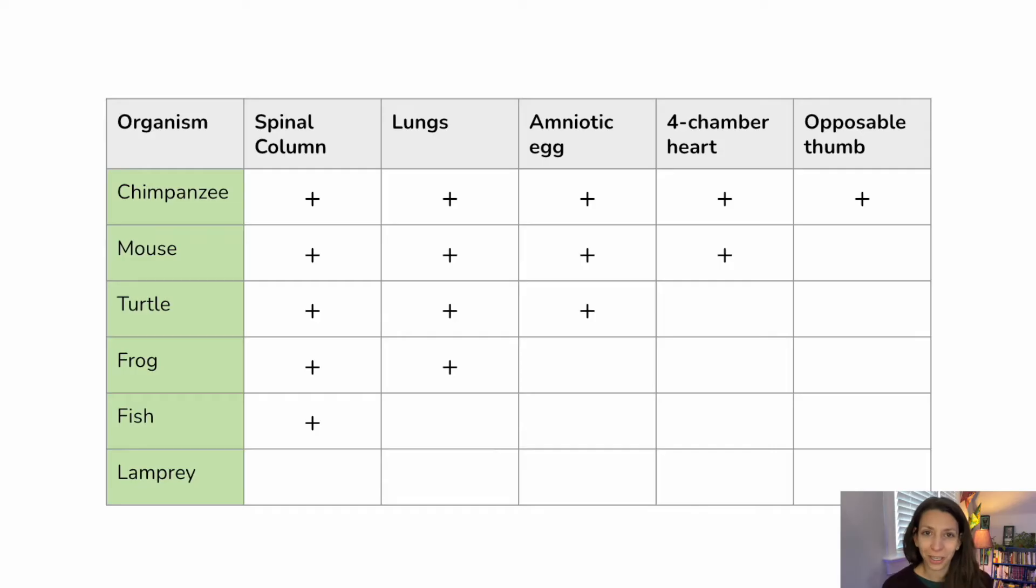Now we're going to have you draw your own tree. So make sure you do get that scratch paper out. And here we have a chart or a table of shared derived traits. We have a bunch of different organisms, and then the plus sign indicates whether or not they have that trait. What I want you to do is do your best to create a cladogram based on this table and show how all of these organisms could be related and where these traits appear on the cladogram. Take a second to pause the video and come back when you're ready.